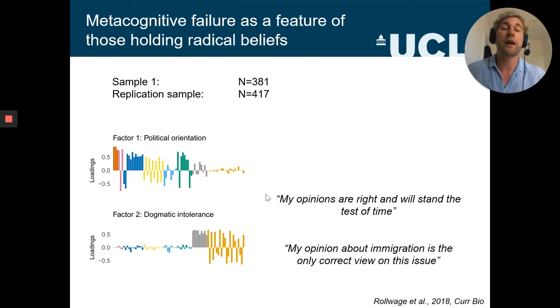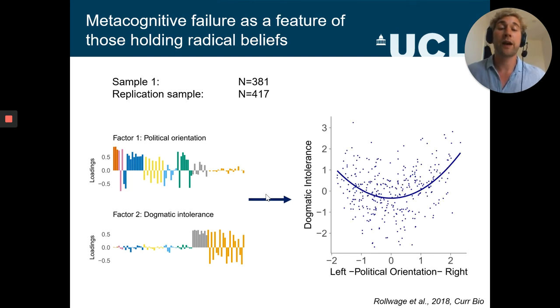And just to give you a flavor of what it really measures, the two highest loading items were 'my opinions are right and would stand the test of time' and the second item was 'my opinion about immigration is the only correct view on this issue.' So we then asked, how are these two factors related to each other? And we found that there was a quadratic relationship showing that people on the far left and people on the far right hold similarly dogmatic and intolerant views, as you might expect from something that measures political radicalism.